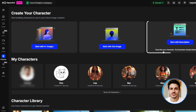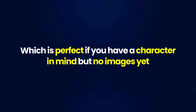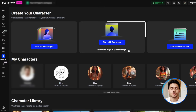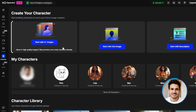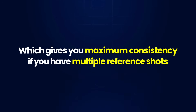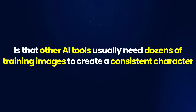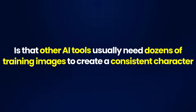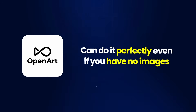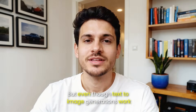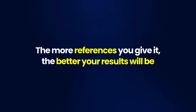The first option is start with description, which is perfect if you have a character in mind but no images yet. The second is start with one image, which only requires a single reference photo. And the third is start with four plus images, which gives you maximum consistency if you have multiple reference shots. What most people don't understand is that other AI tools usually need dozens of training images to create a consistent character, and even then the results aren't always accurate. However, OpenArt can do it perfectly even if you have no images, which is honestly insane. But the more references you give it, the better your results will be.